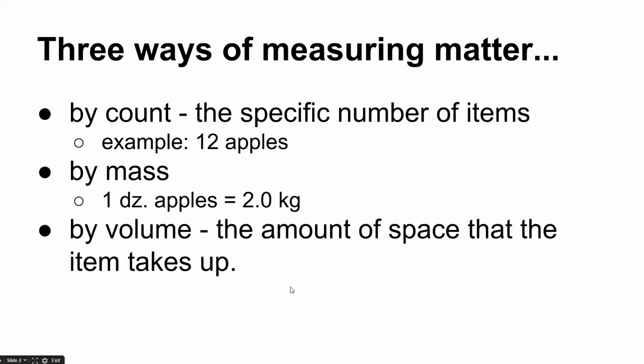And then lastly is by volume. We don't often measure a whole lot of things by volume, but that's basically just the amount of space that the item is going to take up. If I were to buy, let's say a bushel of apples or a portion of a bushel of apples, so maybe 0.2 bushels, this is a volume. Those are the three ways in which we're going to be looking at measuring things in a scientific way.